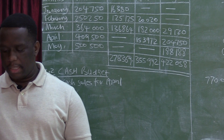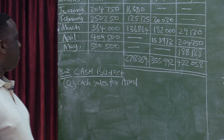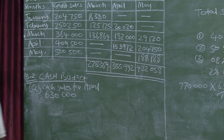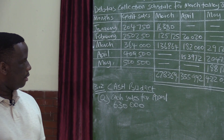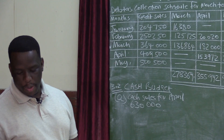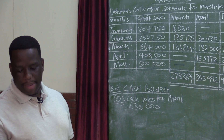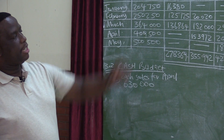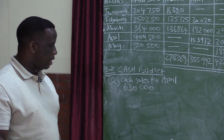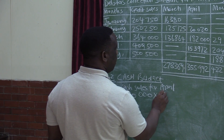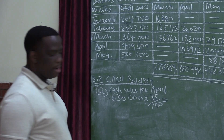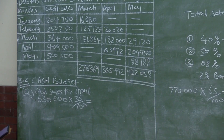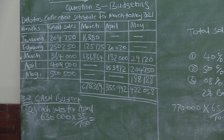It's very easy for us to calculate that because we are given the total sales. We are planning to have total sales amounting to 630,000 in April. We know that total sales is 100%, but credit sales are expected to be 65%, so automatically cash sales will be 35%. So to calculate cash sales, it will be 630,000 multiplied by 35%.